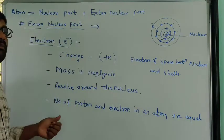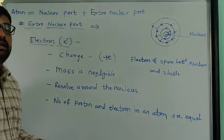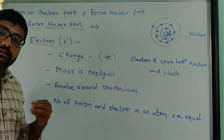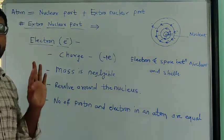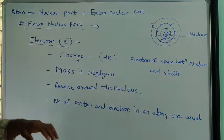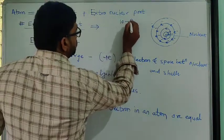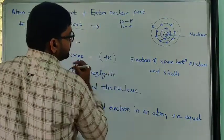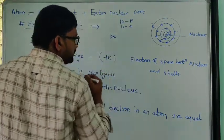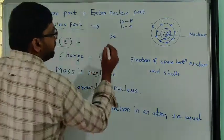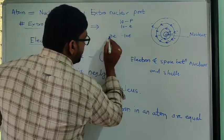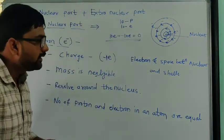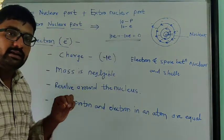The number of protons and number of electrons in an atom are equal - that number is always the same. So whatever positive charge an atom has, suppose this atom has 10 protons and 10 electrons, then it has plus 10e charge and minus 10e charge, so plus 10e minus 10e equals zero. The overall charge present on an atom is always zero - the atom is always electrically neutral.